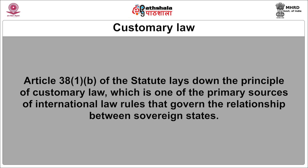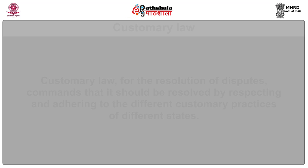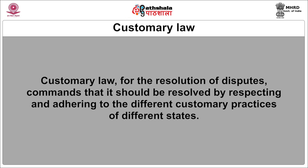Now let's look at customary law. Article 38.1(b) of the statute lays down the principle of customary law, which is one of the primary sources of international law rules that govern the relationship between sovereign states. The element of unwritten rules and implied consent of the state is what gives customary law its binding force. This principle, though difficult to define, has a wide-ranging effect, for it tends to unilaterally bind states and serve as an important philosophic basis in the international law arena.